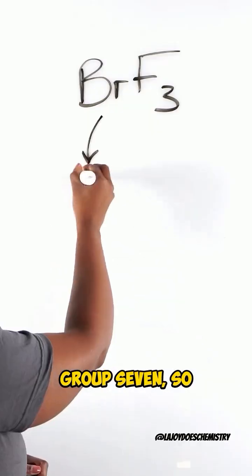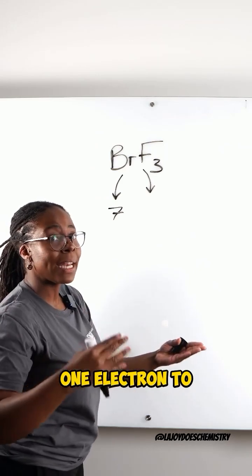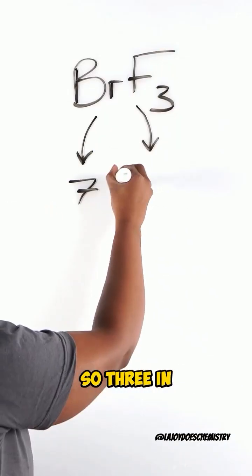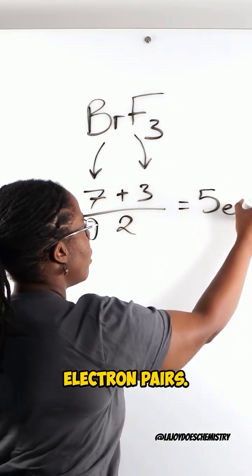Bromine is in group 7, so that's 7. Now, there are 3 fluorines coming in, each contributing 1 electron to a covalent bond. So, 3 in total, which makes 5 electron pairs.